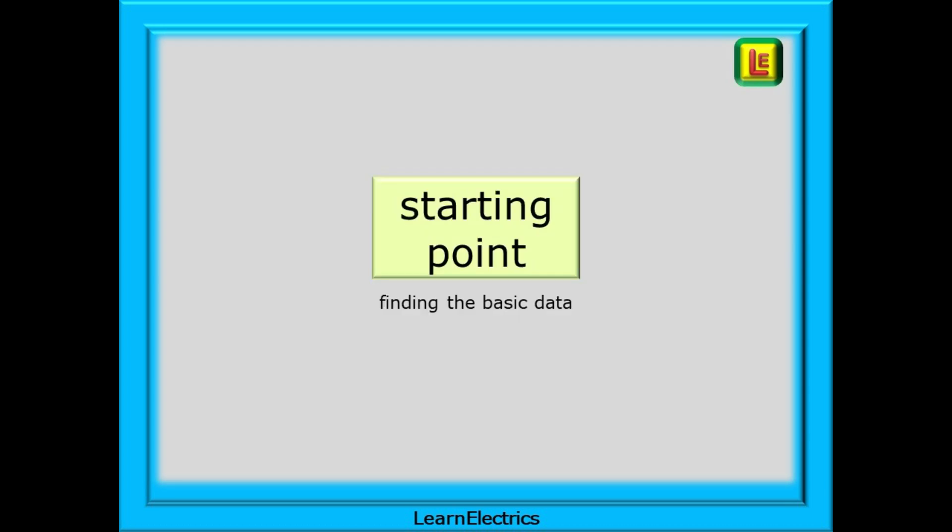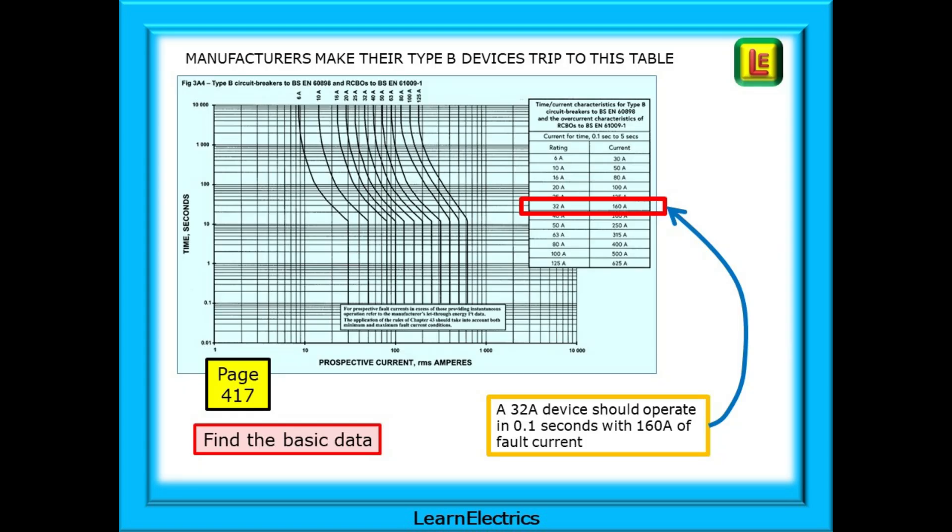We can now go to our starting point, the tables in Appendix 3, and find the basic or raw data that we need. This table is found on page 417 of the wiring regulations book, the Brown Book, and is specifically for Type B circuit breakers and RCBOs. Manufacturers will make their Type B devices trip to this table. The table on the top right gives us the data that we need.